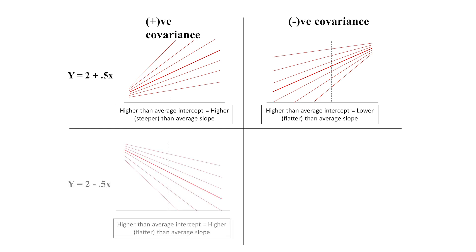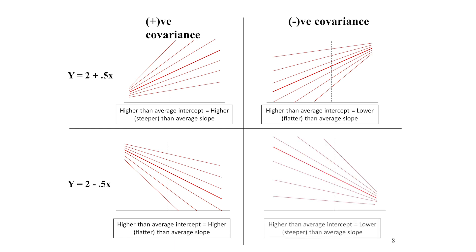When the coefficient is negative, the opposite happens. A positive covariance means that when the intercept is higher than average, you are adding a positive residual to a negative coefficient, making it weaker. And a negative covariance means that when the intercept is higher than average, you are adding a negative residual to a negative coefficient, making it stronger in the negative direction.